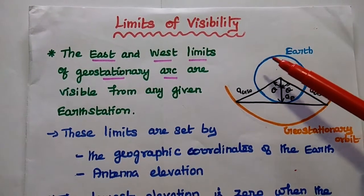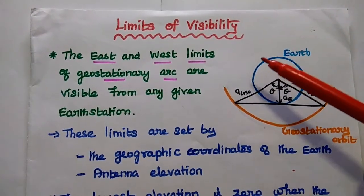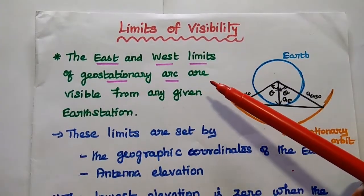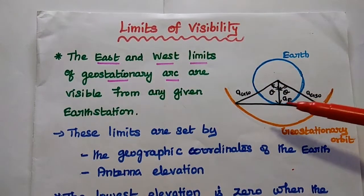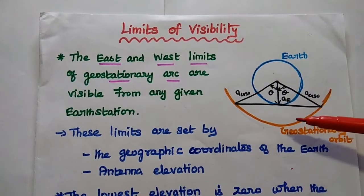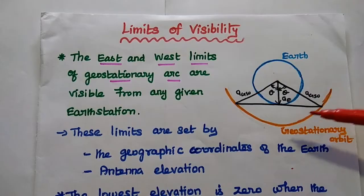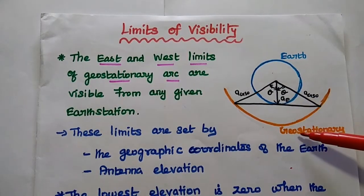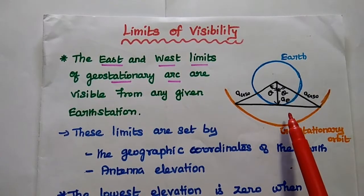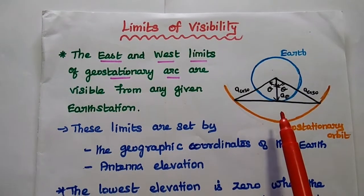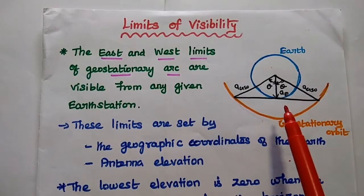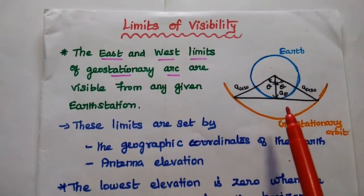Now we are going to discuss limits of visibility in satellite communication. The limits of visibility represent the east and west limits of the geostationary arc which are visible from any given earth station — that is, the range of visibility of the satellite from the earth station. These limits are set by the geographic coordinates of the earth station and also the antenna elevation. The antenna elevation value is very important to define the limits of visibility.